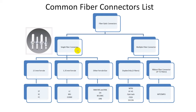However, some single fiber connectors are also available in duplex version, which can hold up to 2 fibers. Single fiber connectors can also be categorized by the size of their ferrule. The most common ones are the 2.5mm ferrule connector and the 1.25mm ferrule connector. There are some other ferrule sizes available, which are mostly legacy and obsolete.